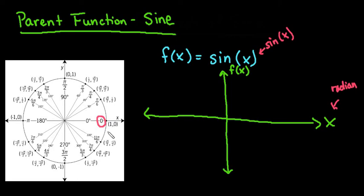If you look at the graph, remember that our ordered pairs are always in the form of cosine comma sine. So what we're going to do is essentially look at our y coordinate all the way around the circle.